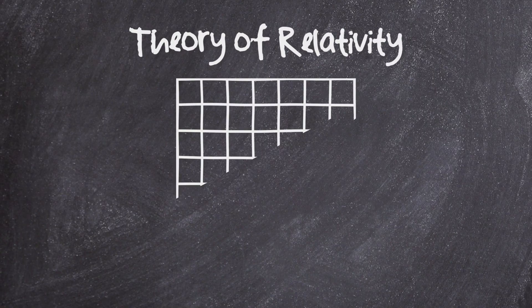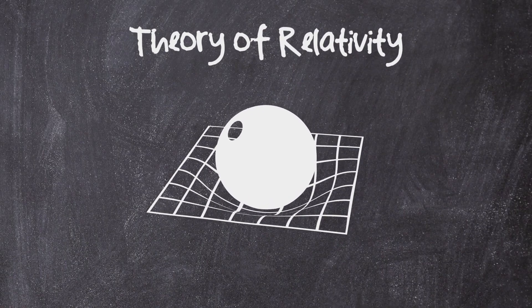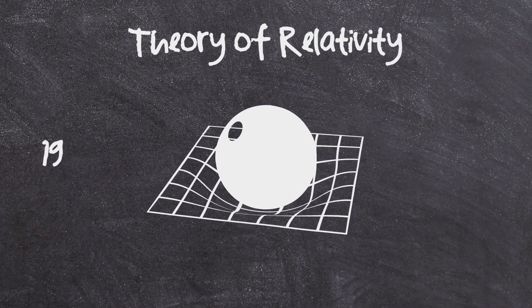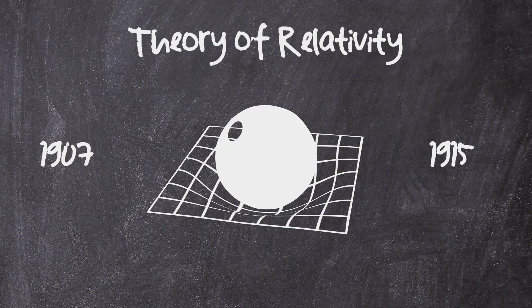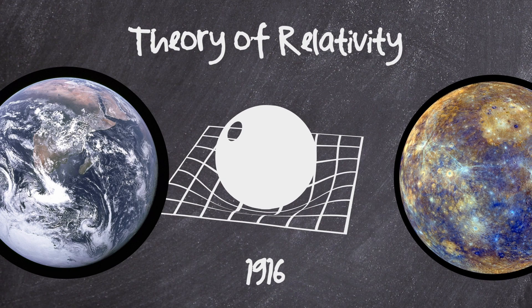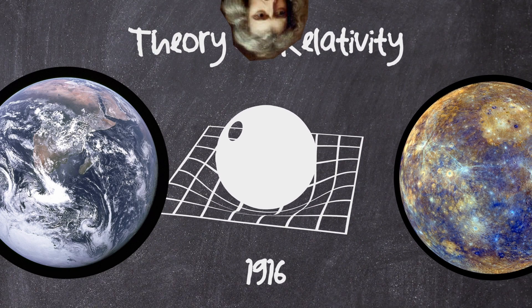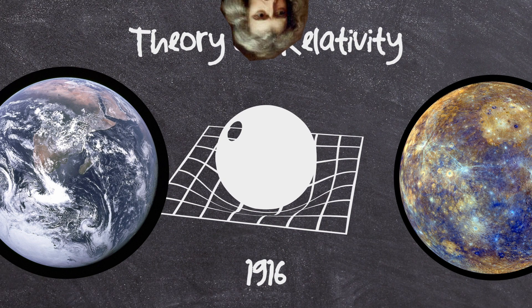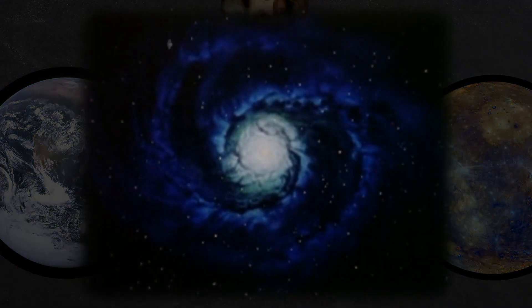To understand Einstein's mistake, first we need to look at his theory of general relativity — mass and energy bend space and time, that theory. He worked on developing it between 1907 and 1915, to later publish it in 1916, with some tests on Earth and some help from Mercury to confirm everything checked out. And just for fun, he tried to apply his formulas to the entire universe.